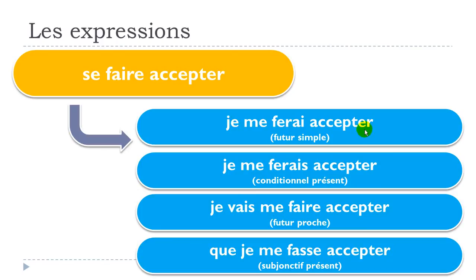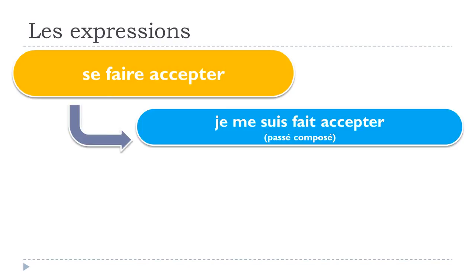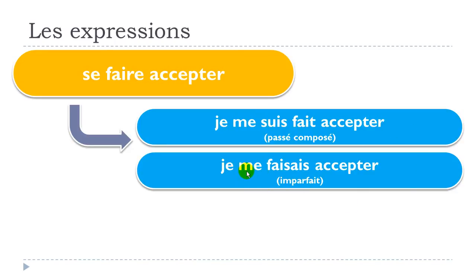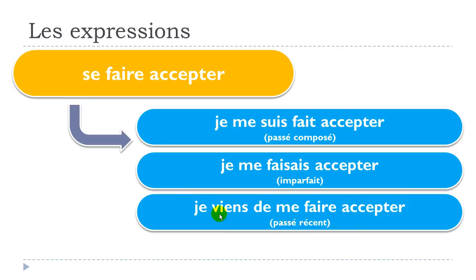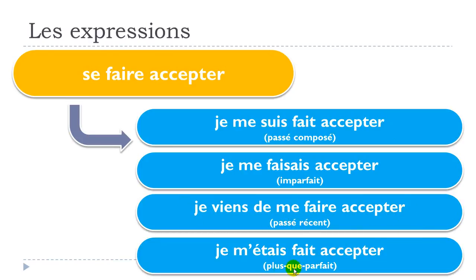Now four past tenses. Passé composé: je me suis fait accepter. Imparfait: je me faisais accepter. Passé récent: je viens de me faire accepter. Plus-que-parfait: je m'étais fait accepter.